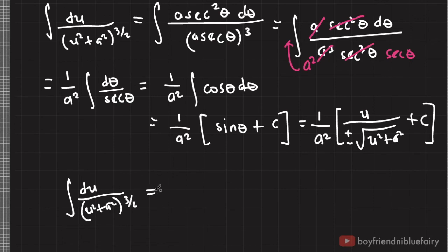And that's it, we have solved the integral of du over quantity u squared plus a squared raised to 3 halves, and it is equal to u over plus-minus a squared square root of u squared plus a squared plus a constant.